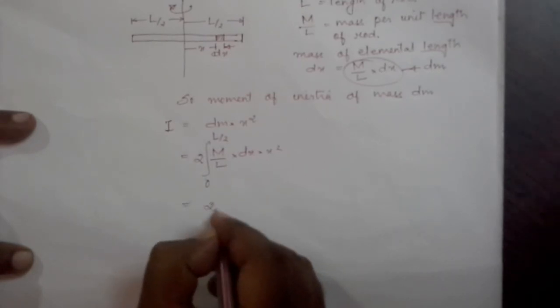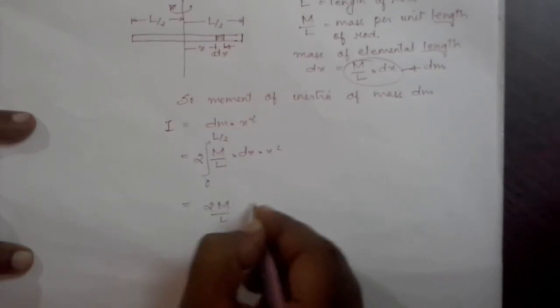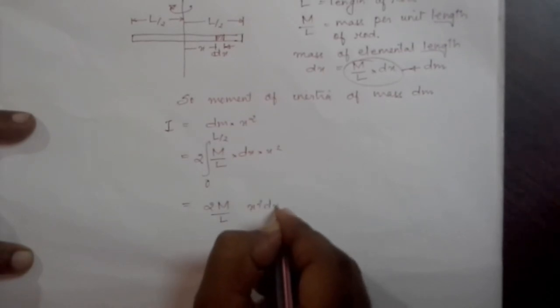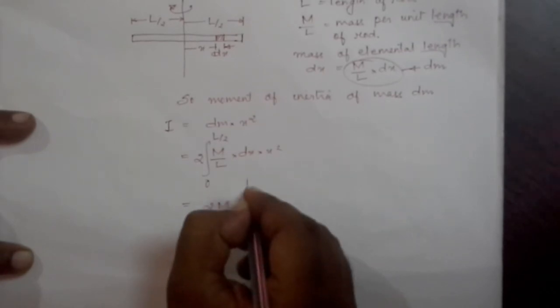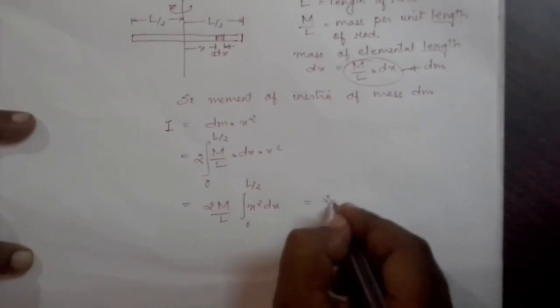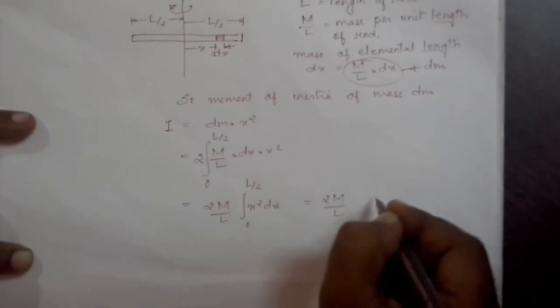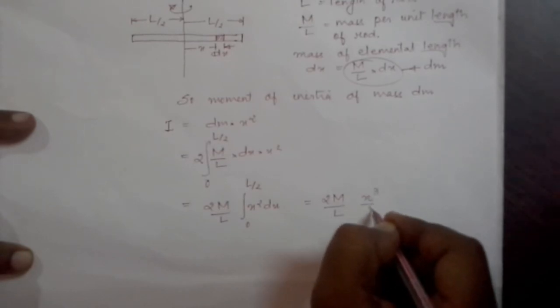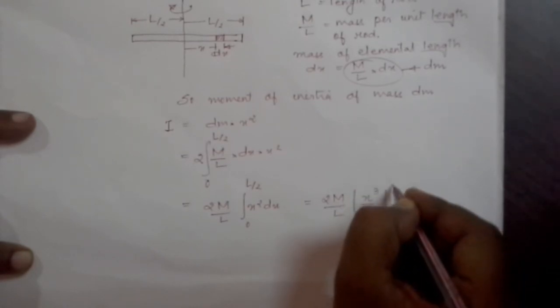So now we will get 2M by L into x square dx, integration varying from 0 to L by 2. So that will be equal to 2M by L into x cube by 3, varying from 0 to L by 2.